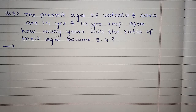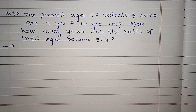Practice Set 4.1 ka Question No. 7 and Question No. 8 aaj hum dekhenge. The present ages of Vassala and Sara are 14 years and 10 years respectively. After how many years will the ratio of their ages become 5 to 4?